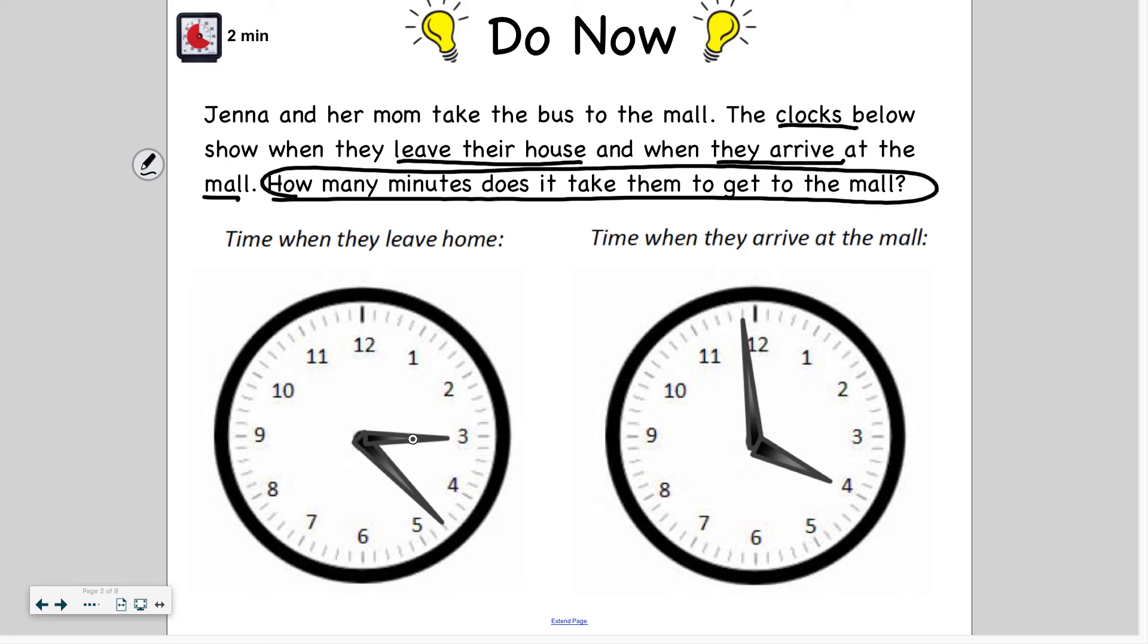All right, welcome back. So on this first clock, I see that it is 3 o'clock. I'm going to check the time, the minutes exactly. So 5, 10, 15, 20. This would be 21, 22, 23. So it is 3:23.